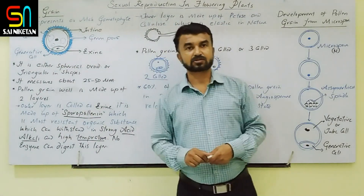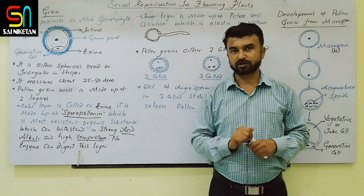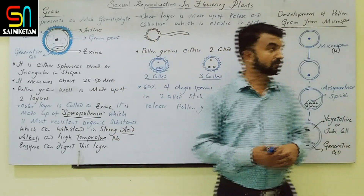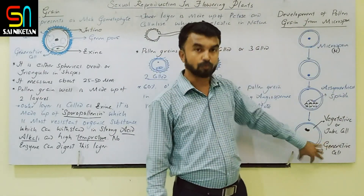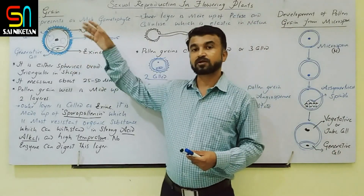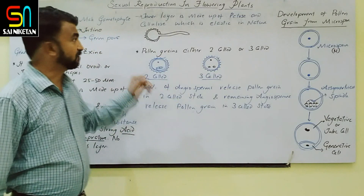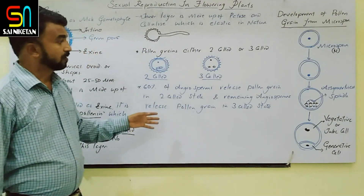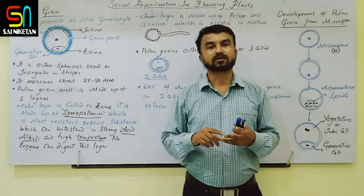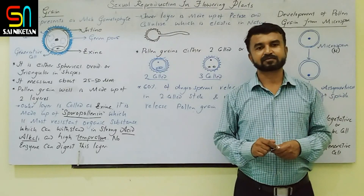To summarize the pre-fertilization male structures: stamen consists of filament and anther; the T.S. of anther shows anther lobes and microsporangia structure; microsporogenesis takes place in the microsporangia producing microspores; microspores mature into pollen grains with exine (sporopollenin) and intine (pectin-cellulose); the generative cell undergoes mitotic division to produce two male gametes. Some small remaining topics — pollen viability, economic importance, and cryopreservation — will be covered in the next video. Take care and have a nice day.